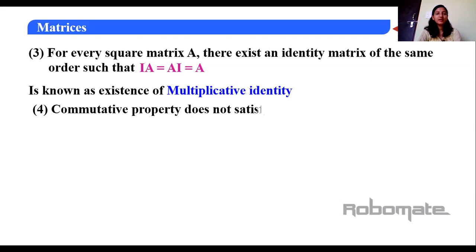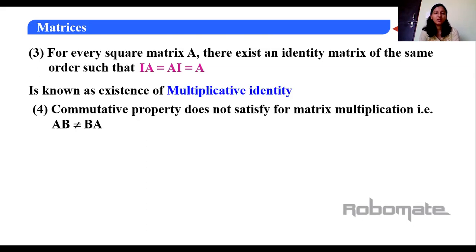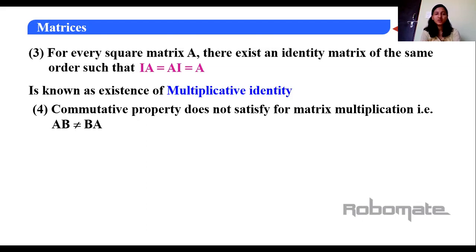The commutative property does not hold for matrix multiplication. A·B is not equal to B·A. In addition the commutative property was satisfied — A + B = B + A — but not in multiplication.